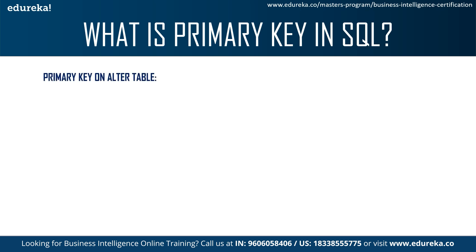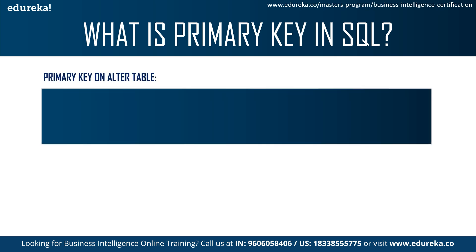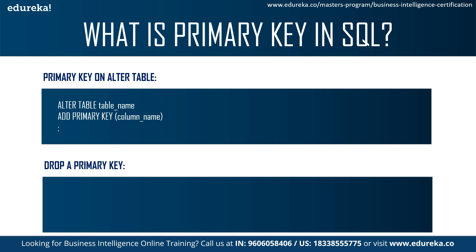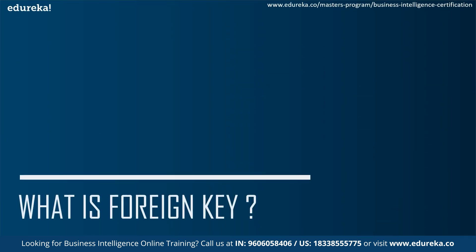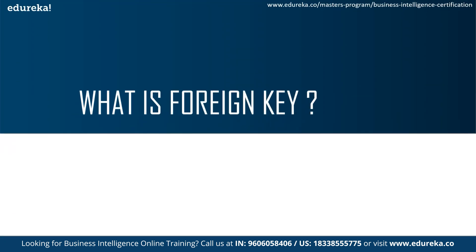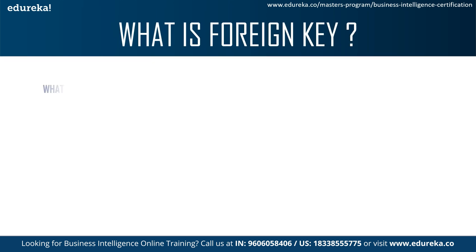If you already have a table and want to set a column as a primary key, you can use the ALTER command. The syntax is ALTER TABLE with the table name, then ADD PRIMARY KEY with the column name. Similarly, if you want to drop a primary key, we use the ALTER TABLE command again, but instead of ADD PRIMARY KEY we write DROP PRIMARY KEY.